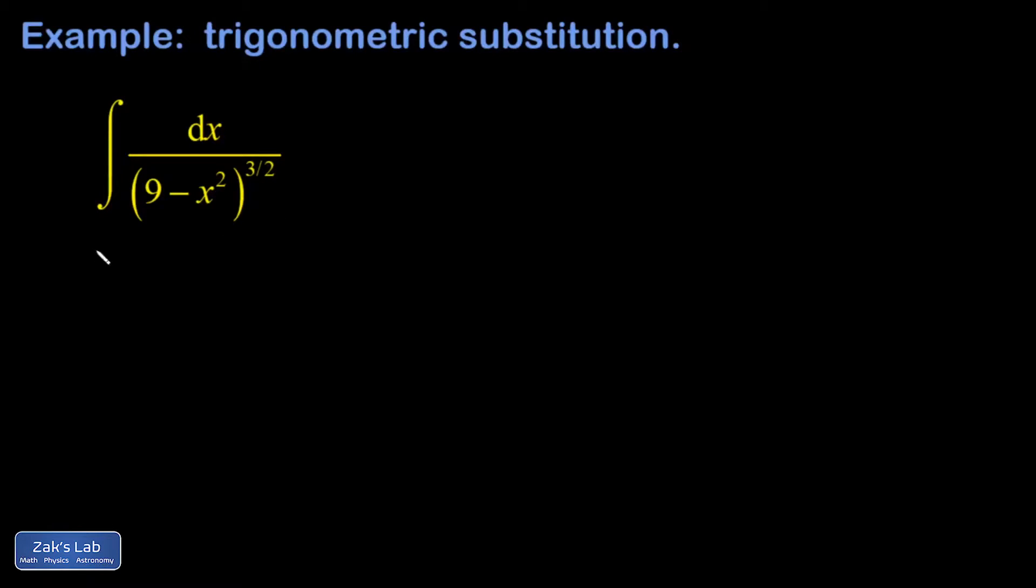In this trig substitution, I'm trying to match the form of constant minus variable thing squared, which comes from this Pythagorean identity. Cosine squared plus sine squared equals 1.